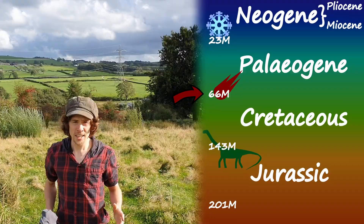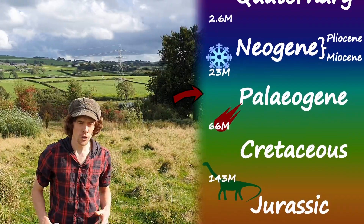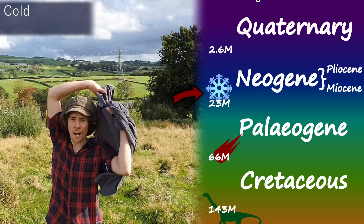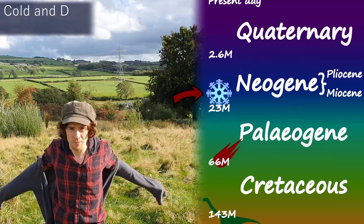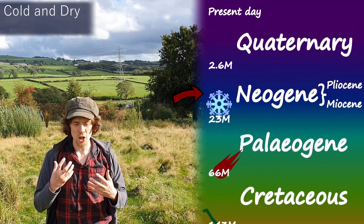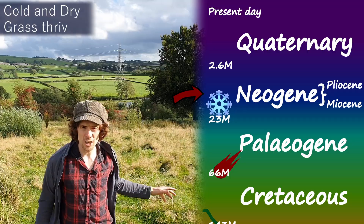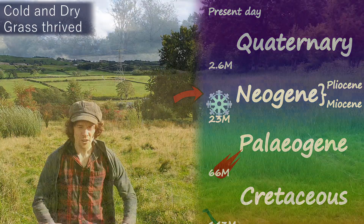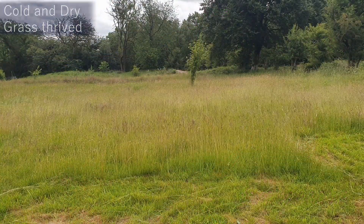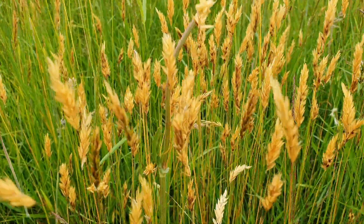As we get into the Neogene period, 23 to 2.6 million years ago, the earth cooled and the continents dried out. Grass, resilient to cold and drought conditions, flourished, spreading to every continent, with large grasslands replacing forests. This is evidenced by a boom in grass fossil records from the time.